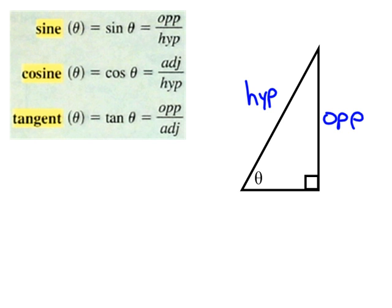And the one that's right next to theta, there's two sides right next to theta. There's this side and this side. Well, one of them is always going to be the hypotenuse. So, the other one that is not the hypotenuse is the adjacent.